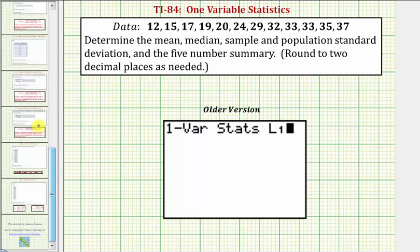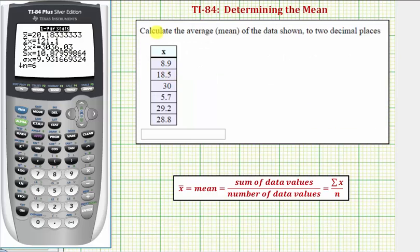Once you press ENTER, we would see this screen, and again, x-bar is equal to the average or mean. Therefore, at two decimal places, the mean or average of our data set would be approximately 20.18.